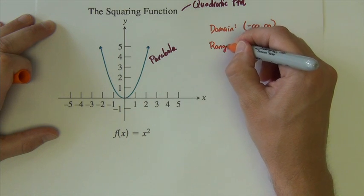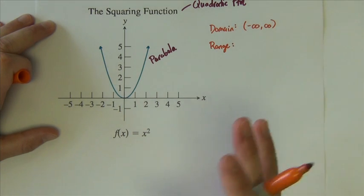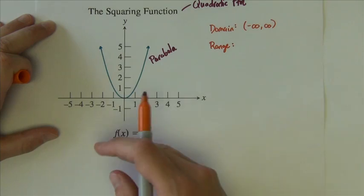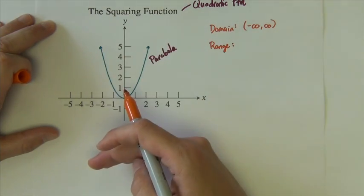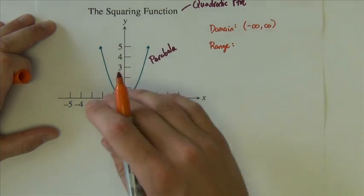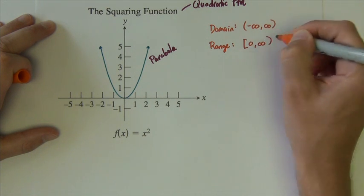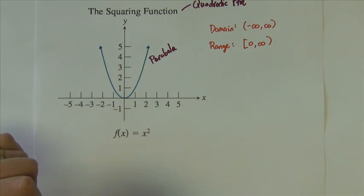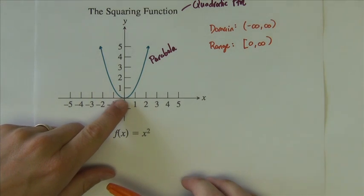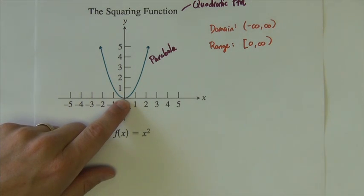Its range, however, will not always be the same. It depends on if the graph is shifted up or down, or if it is reflected upside down. But in this particular case, what we are looking at is a range of 0 to infinity. Square bracket on 0 because the graph does actually touch 0 down here at its bottom point.